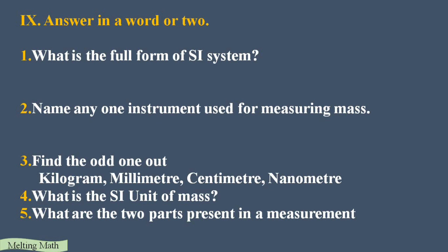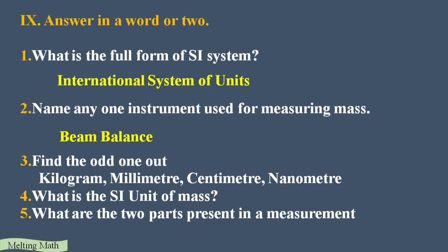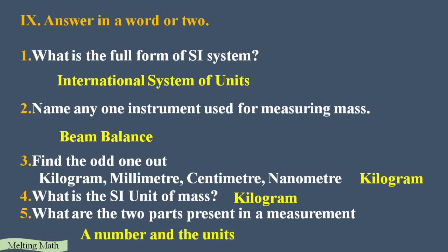Next section — answer in a word or two. First: what is the full form of SI unit? SI unit stands for International System of Units. Second: name one instrument used for measuring mass — that is a beam balance. Third: find the odd one out from kilogram, millimeter, centimeter, nanometer — kilogram is the odd one, as the others are all units of length. Fourth: the SI unit of mass is kilogram. Fifth: what are the two parts present in a measurement? They are number and units.